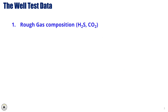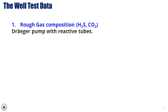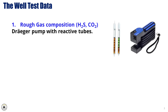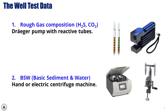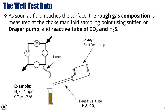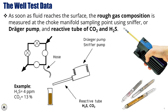1. Rough gas composition — H2S and CO2 — measured using a Draeger pump with reactive tubes to analyze the concentration of hydrogen sulfide (H2S) and carbon dioxide (CO2), which is essential for assessing potential risks and safety concerns in the well. As soon as the fluid reaches the surface, the rough gas composition is measured at the choke manifold sampling point using a sniffer or Draeger pump along with reactive tubes specifically designed for detecting CO2 and H2S. This immediate analysis helps in assessing the gas composition and identifying potential safety hazards, such as the presence of toxic gases.